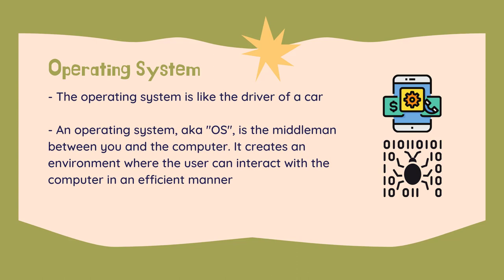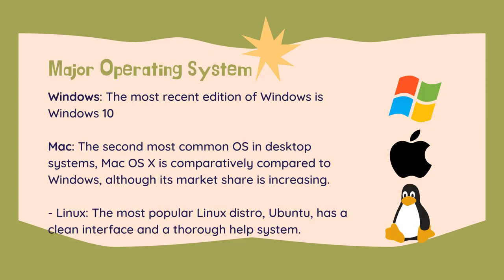Although many things are compatible across platforms, more involved programs such as photo editing tools and games will not work across all platforms — in the same way that giving your cab driver directions in French would be a problem unless you were in France. An operating system, or OS, is the middleman between you and the computer. It creates an environment where the user can interact with the computer in an efficient manner. There are three major OS to consider for your first desktop, notebook, or PC.